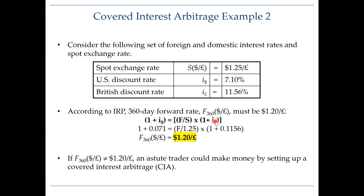If you plug these numbers into the interest rate parity equation — the US interest rate, UK interest rate, and spot rate of $1.25 — we get a forward rate of $1.20 per pound. This means that for interest rate parity to hold, the forward rate needs to be $1.20 per pound. If the forward rate happens to be anything other than $1.20, we have a covered interest arbitrage opportunity and we can make money.